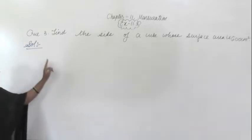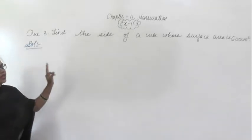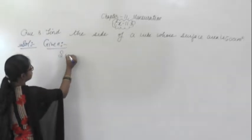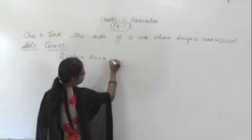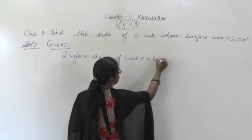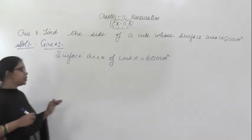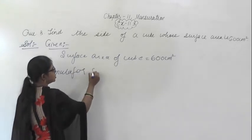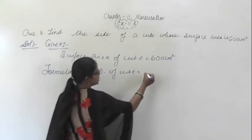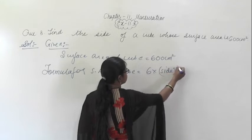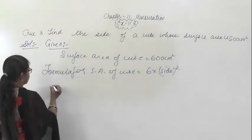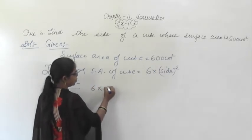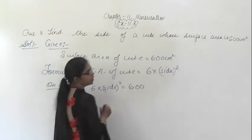Question number 3: In this question it says find the side of the cube whose surface area is given to you. Given: surface area of cube is 600 centimeter square. You know the formula for surface area of a cube — that is equal to 6 into side squared. On substituting, 6 into side squared equals 600 centimeter square.